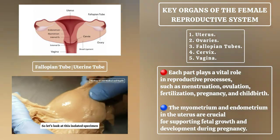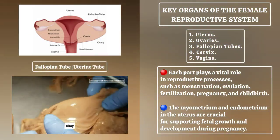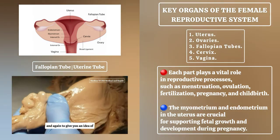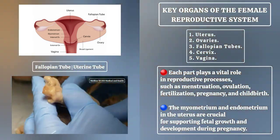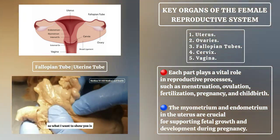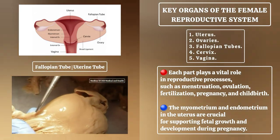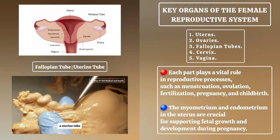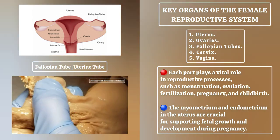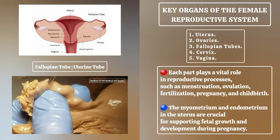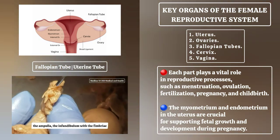Let's look at this isolated specimen, to give you an idea of what we're looking at. This would be a uterine tube. Here's the isthmus, here is the ampulla, and the infundibulum with the fimbriae.